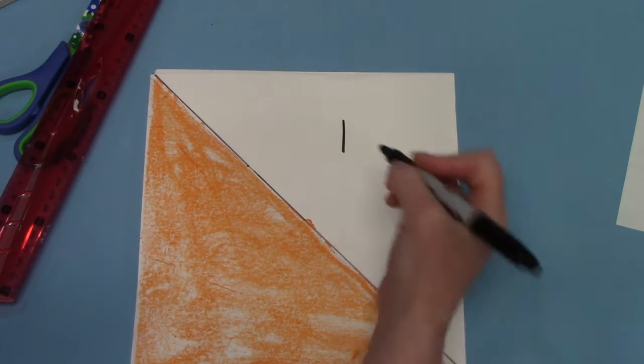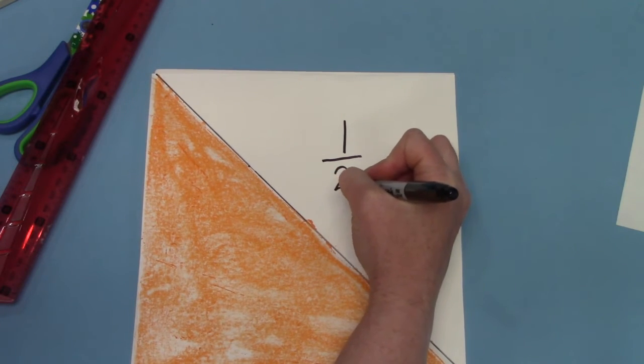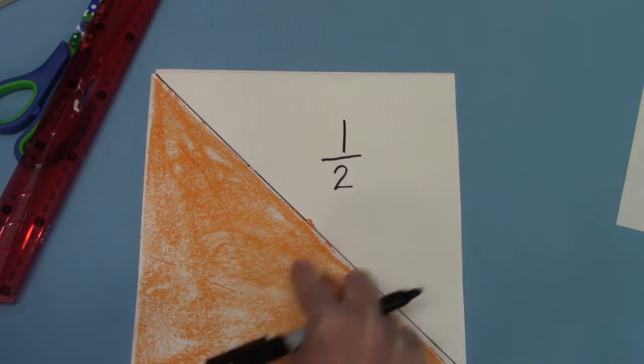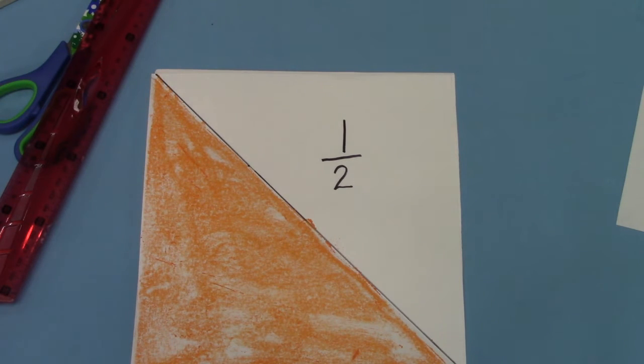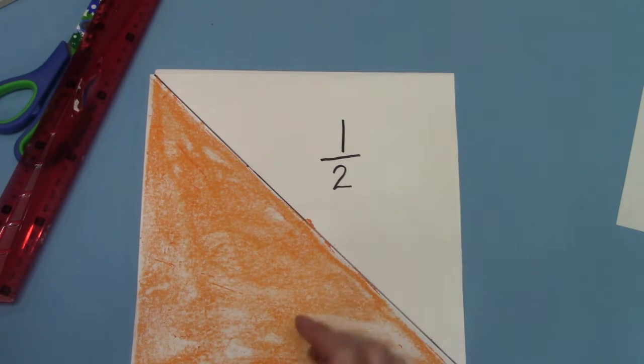When you have one half, we write half as in one out of the two pieces, one over the two. The two tells us that our square is divided into two pieces, and the one tells us that we have one out of the two that are colored.